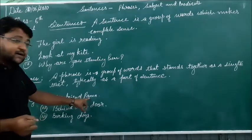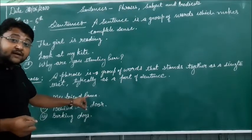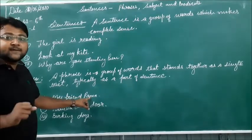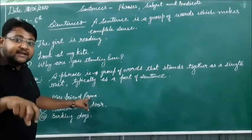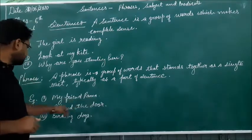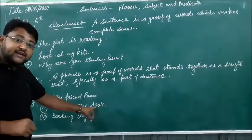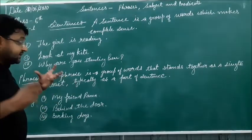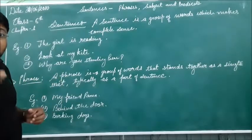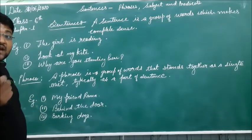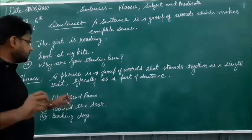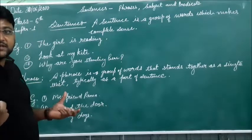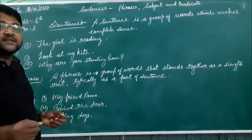So here you can see examples of a phrase. 'My friend Rama' — it doesn't give complete meaning, that's why it is not a sentence but it is a phrase. 'Behind the door' — that is also a phrase. 'Barking dogs' — because it doesn't have a subject and predicate, the phrase or the sentence which doesn't have the subject and predicate is not a sentence.